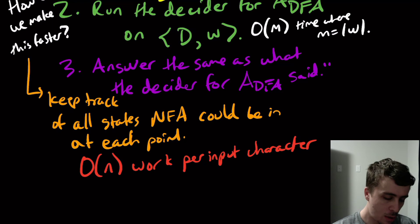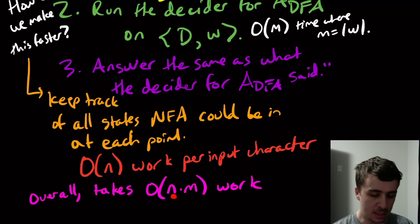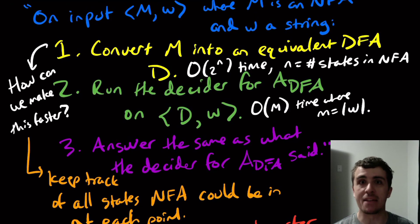So overall then, what we can say, this will take O(n times m) work, or steps of whatever. It doesn't really matter here. Because n is the number of states, because that's the amount of work per character, and there are m characters. Okay, so this shows actually something that's pretty important, which we'll get to in the complexity lectures at some point. But the important thing is that A_NFA is actually decidable. So hopefully that was interesting.